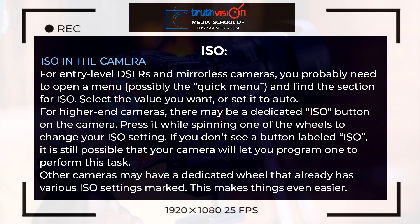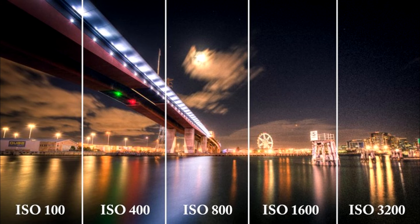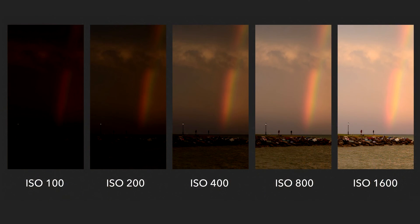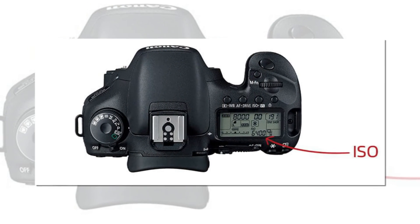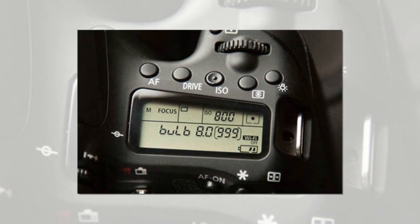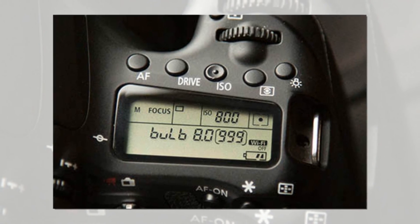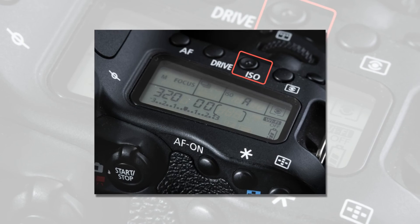I also recommend practicing manually — get a subject near you and try adjusting from ISO 100 to the highest ISO your camera has. You will see the image get brighter as you go up. That's all for ISO. If there's anything else you'd like to learn about ISO, write your questions in the comments and I'll answer them. Please remember to subscribe to our channel and share. Let me know what you've learned today.